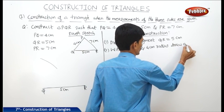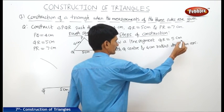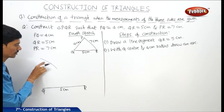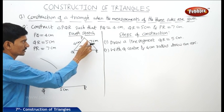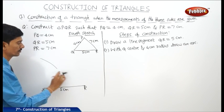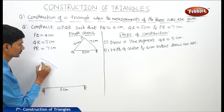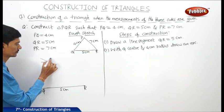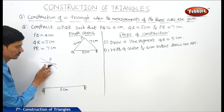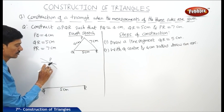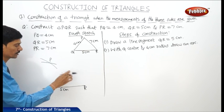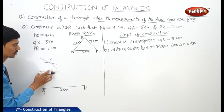Somewhere on that arc we will draw the point P. The point P is somewhere on this arc, and at the same time P is also 7 centimeters away from point R. So we take R as center and 7 centimeters as radius, and draw another arc to cut off the previous arc at P. These two arcs, drawn with Q center 4 cm radius and R center 7 cm radius, will intersect at point P.